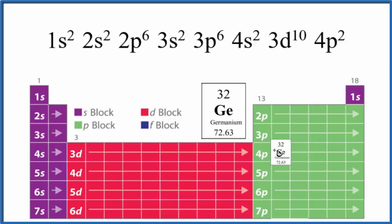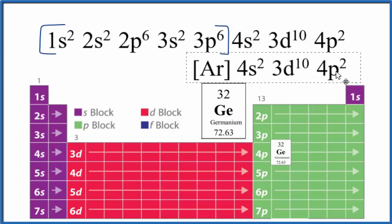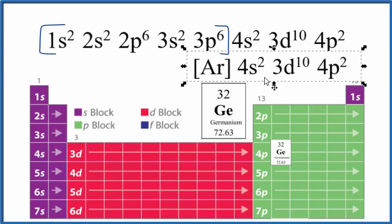If we wanted to condense this down, we could look at the noble gas that comes before germanium on the periodic table. So this would be right here, this would be argon. This is the configuration for argon. We could condense all that down just to [Ar], and then put the ending here. And this would be the condensed notation.